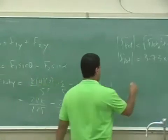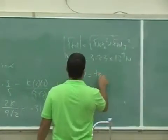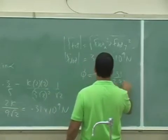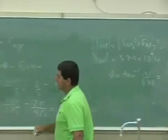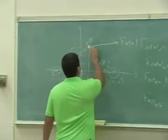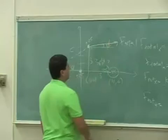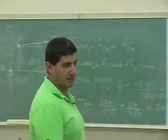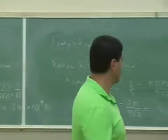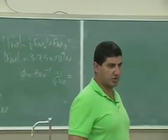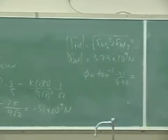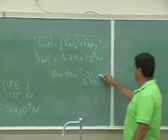And you want to find the direction of that. Phi 10 inverse of 0.31 over 3.72. In other words, what is the direction of that force? This direction right here. Phi. And it's going to be almost 0 degrees. Because the X component dominates the Y component. Right? So that's going to be very, very close to 0. 1, 2 degrees, 3 degrees, or whatever. So tell me what you get for that.